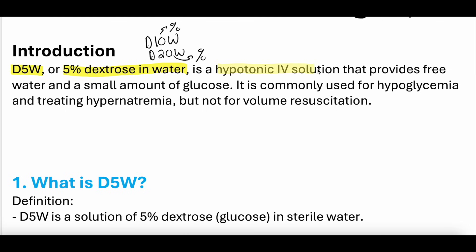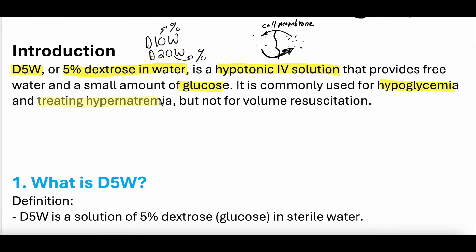D5W is a hypotonic IV solution. Tonicity drives which direction the free water travels. If you are hypotonic, that means the tonicity outside of the cell is less than inside the cell, and water will go from hypotonic areas to hypertonic areas. If you are hypertonic, the tonicity outside the cell is more than inside, so water travels from inside the cell to the outside. D5W is hypotonic, so it travels into the cell. This provides free water and a small amount of glucose — dextrose — commonly used for hypoglycemia and treating hypernatremia.